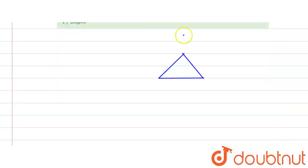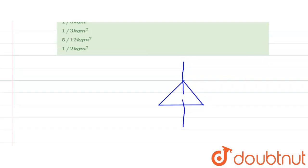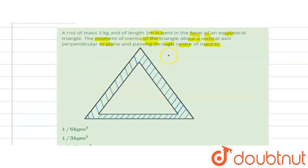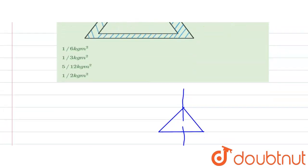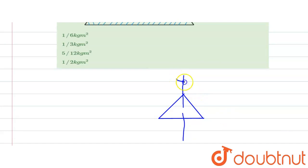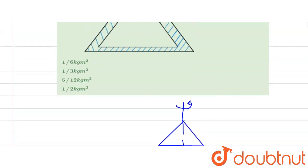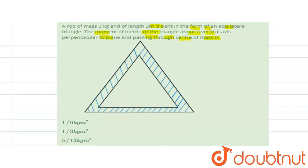We can see that for this triangle, the axis is perpendicular to the plane and passes through the center of mass. The triangle rotates about this axis with angular velocity omega. We need to find the distance r from the center of mass to each rod.